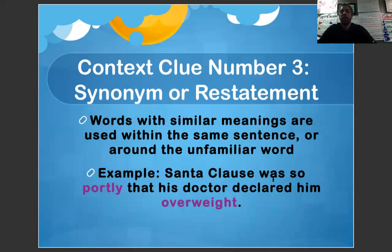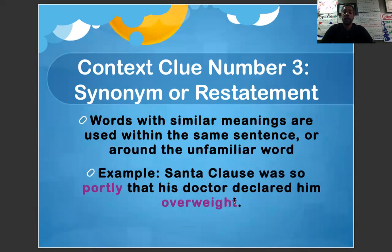Synonym or restatement, context clue number three. Words with similar meanings are used within the same sentence or around the unfamiliar word. An example: Santa Claus was portly and his doctor declared him overweight. Here they use a restatement — portly and overweight — which are also synonyms.